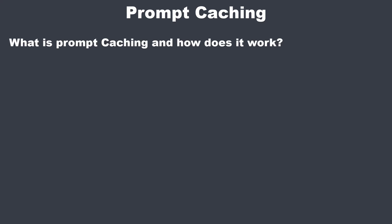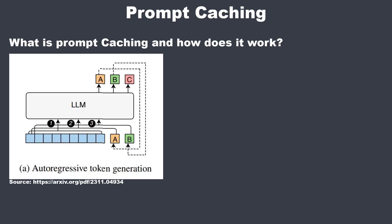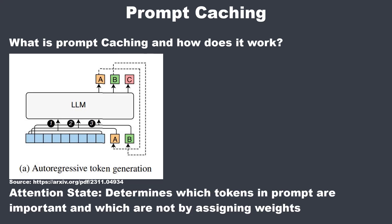Prompt caching is an extension of how LLMs generate text. Normally, LLMs generate text token by token and each step uses the previous output as context. The process involves calculating an attention state, which determines the importance of each token in generating the next one. However, recalculating the attention for every new token can be computationally expensive.